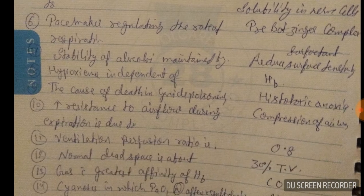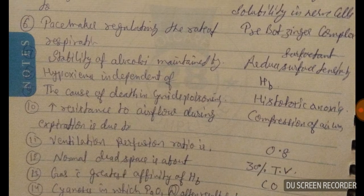Question number seven: stability of alveoli — the stability of alveoli is maintained by the reduced surfactant surface tension. Question number eight: hypoxemia is independent of hemoglobin.